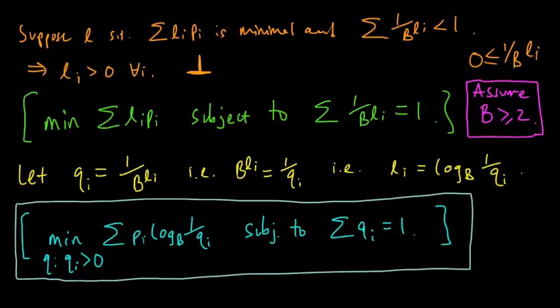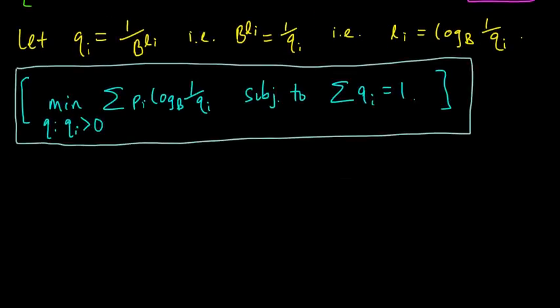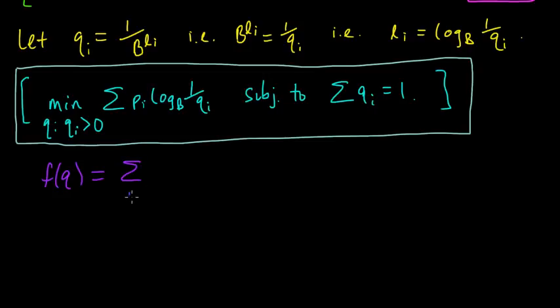Last time we started trying to minimize our expected code word length and we reduced the problem down to a constrained minimization. Let's continue attacking this. Let's analyze the function we're trying to minimize a little bit more. Let's call it f of q — it's some function of the q's. So f(q) is the sum over i of p_i times log(1/q_i).